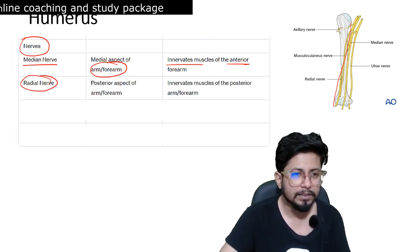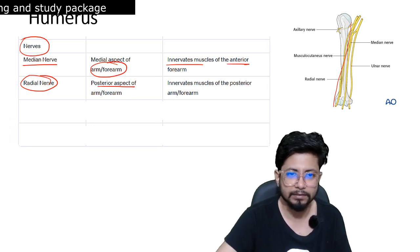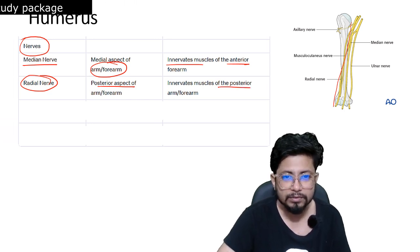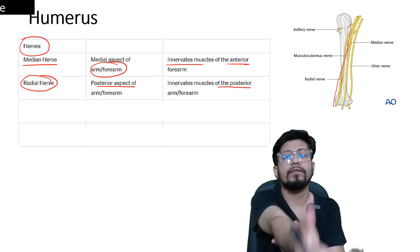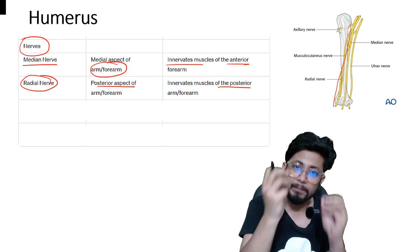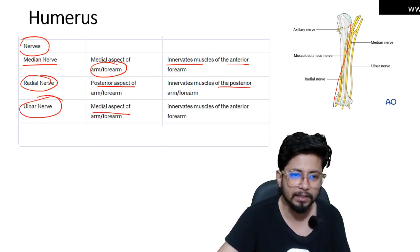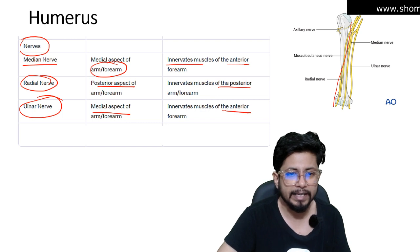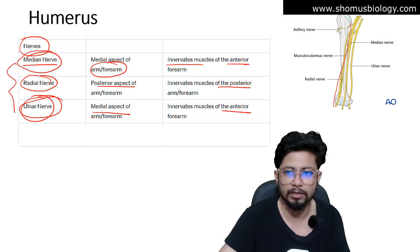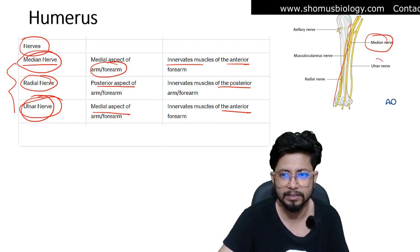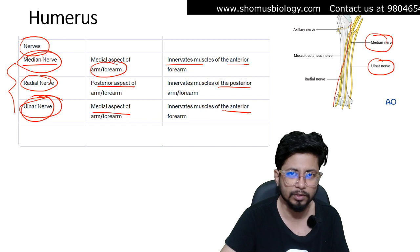The radial nerve is on the posterior aspect and innervates muscles of the posterior arm. The ulnar nerve is on the medial aspect of the arm and innervates muscles of the anterior forearm. The median nerve and ulnar nerve have a similar function in the anterior forearm — their positions differ slightly but their jobs are similar, as you can see in the picture.